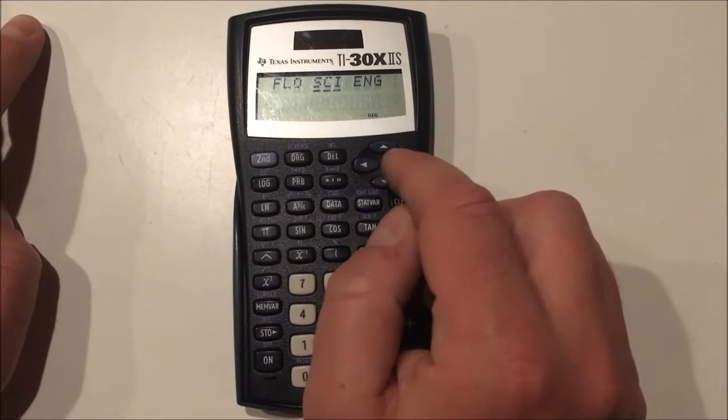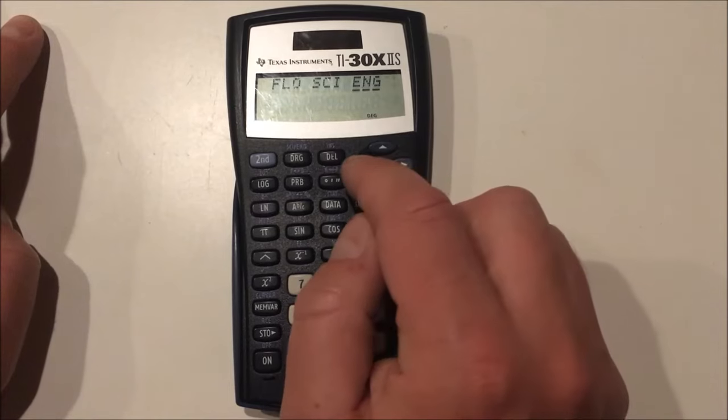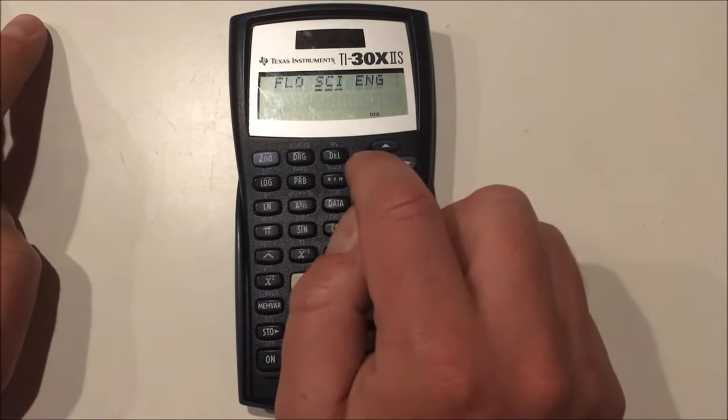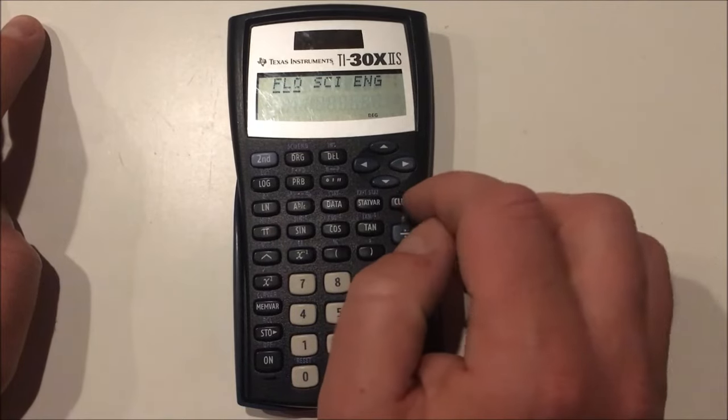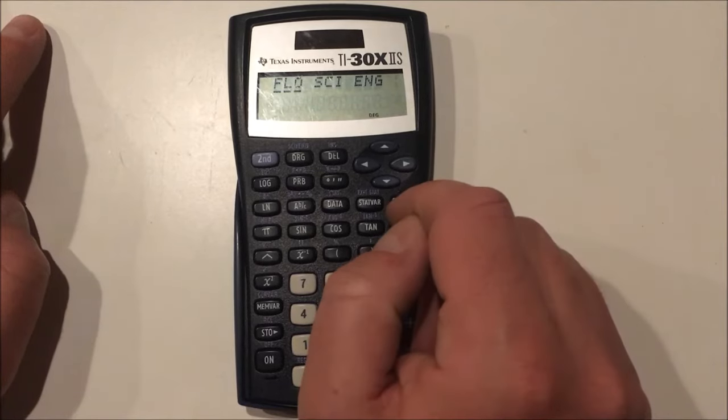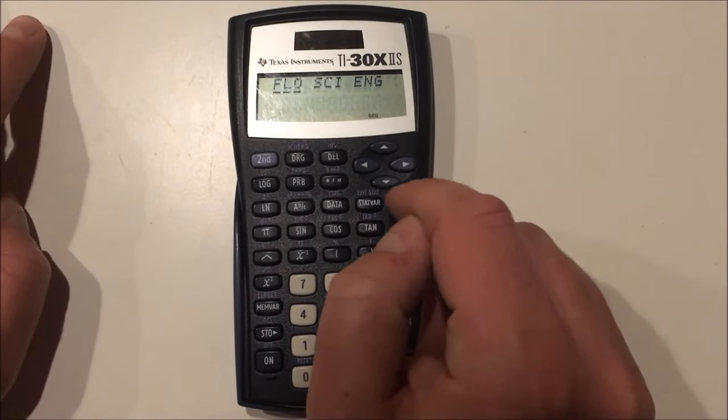Now if you want to reset where you want the mode calculated, you just move the arrows left or right. I'm going to keep things on floating point for this tutorial video because that's the setting you will most likely use. And to exit a menu, you press clear.